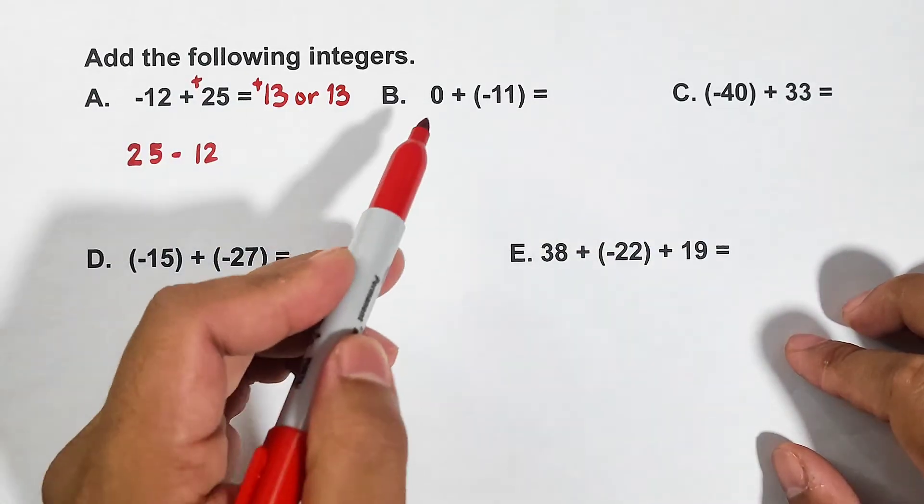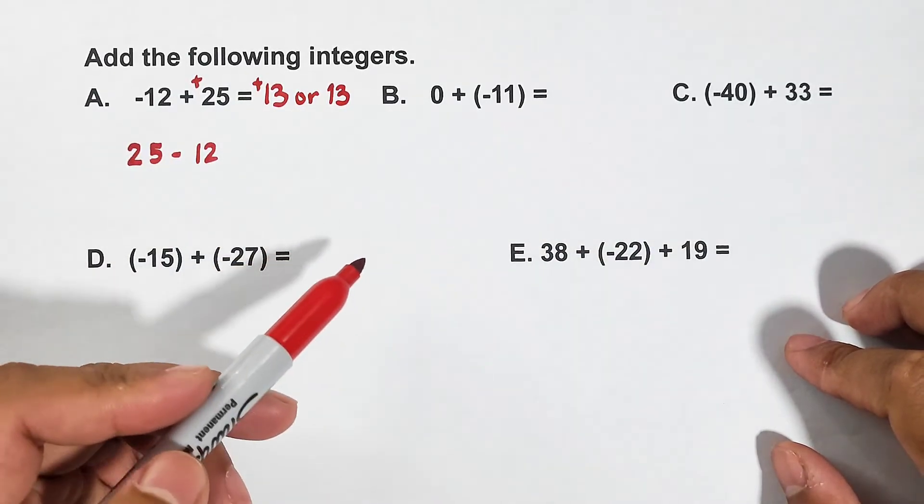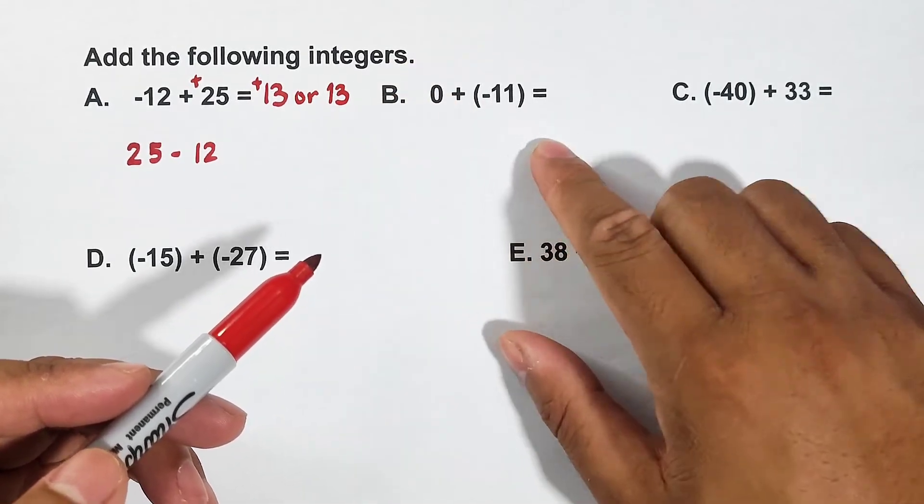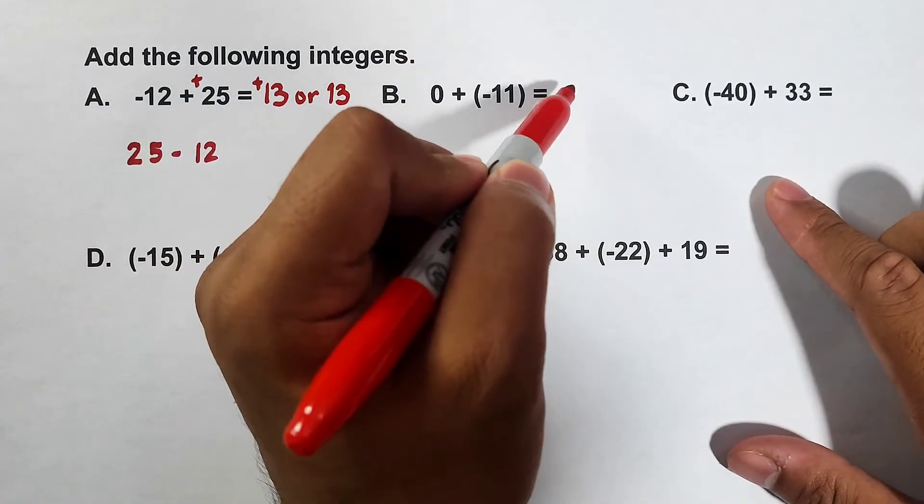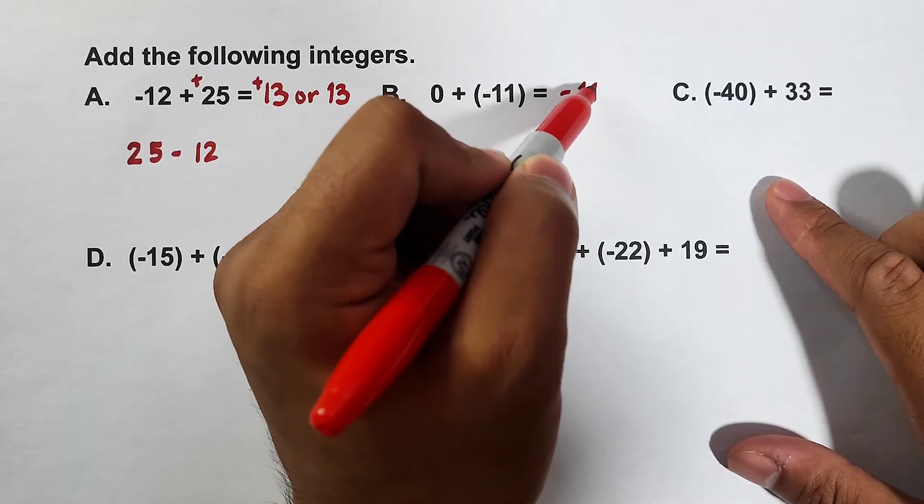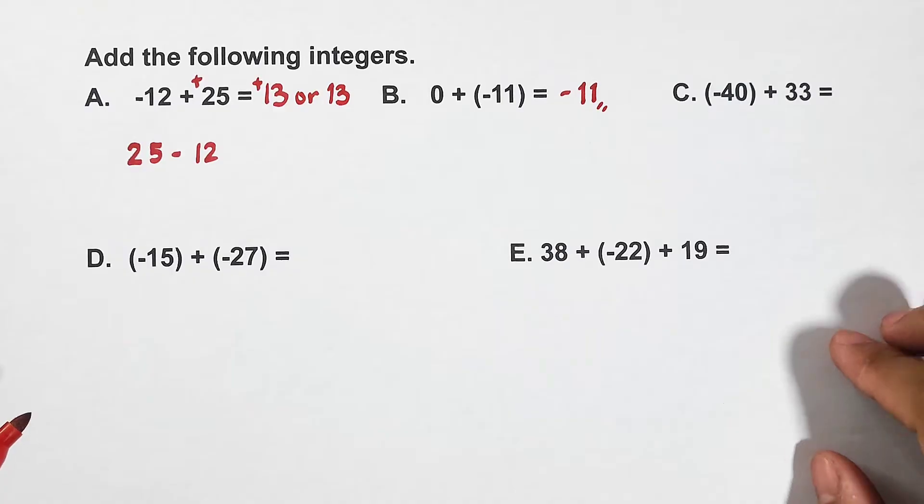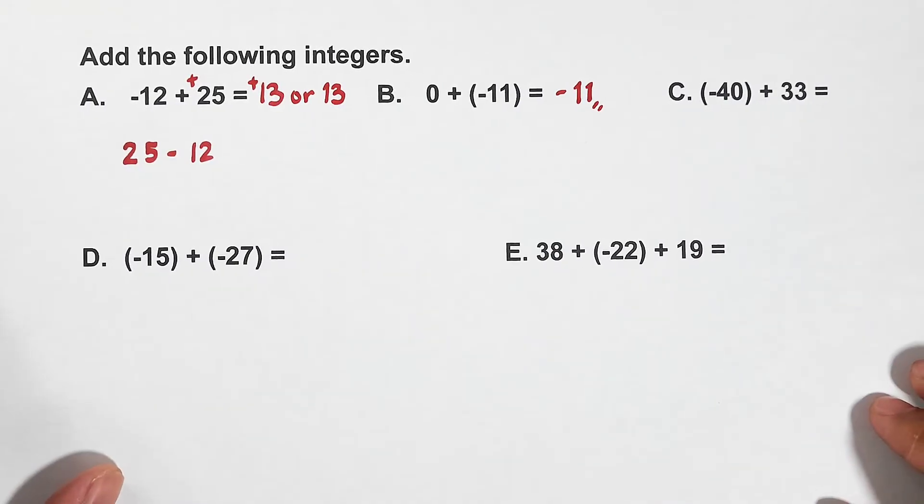Now let's have this one. Zero plus negative 11. Since this one has no value, it's just zero plus negative 11, definitely the answer is negative 11. No argument about it. Negative 11 is the answer.